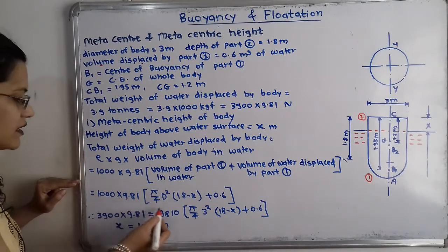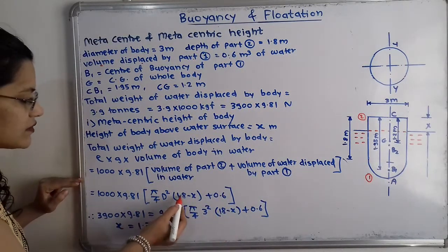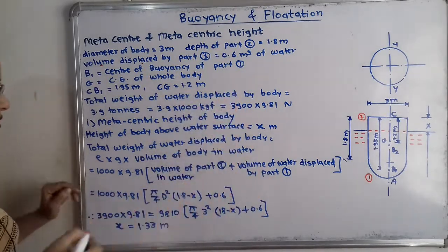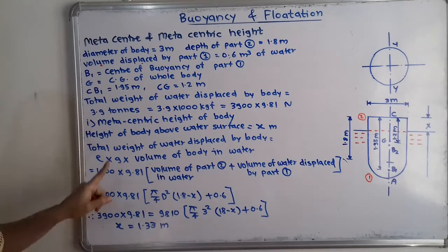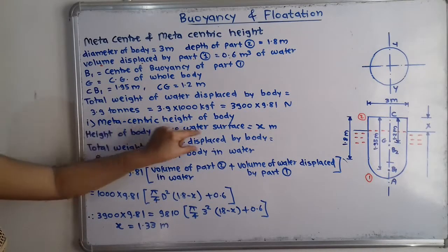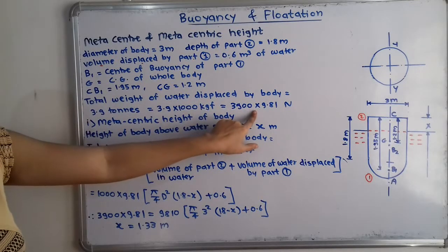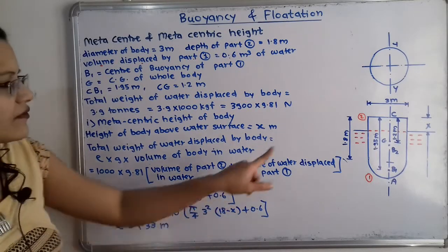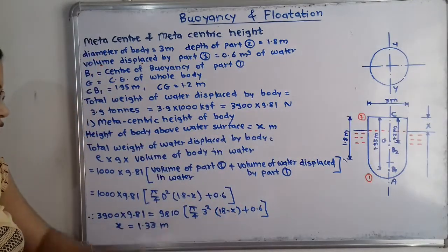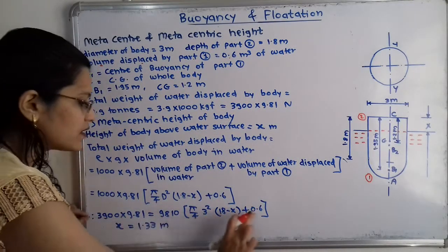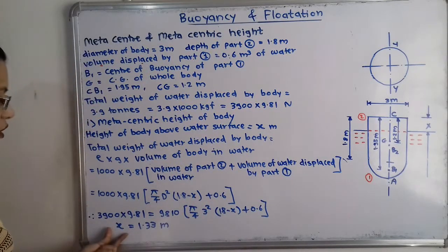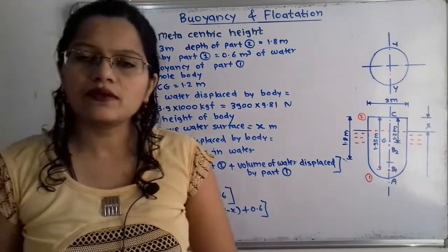Setting up the equation: 3900 × 9.81 = 1000 × 9.81 × [(π/4) × 3² × (1.8 − x) + 0.6]. With d = 3 and only x as the unknown, solving this equation gives x = 1.33 meter.